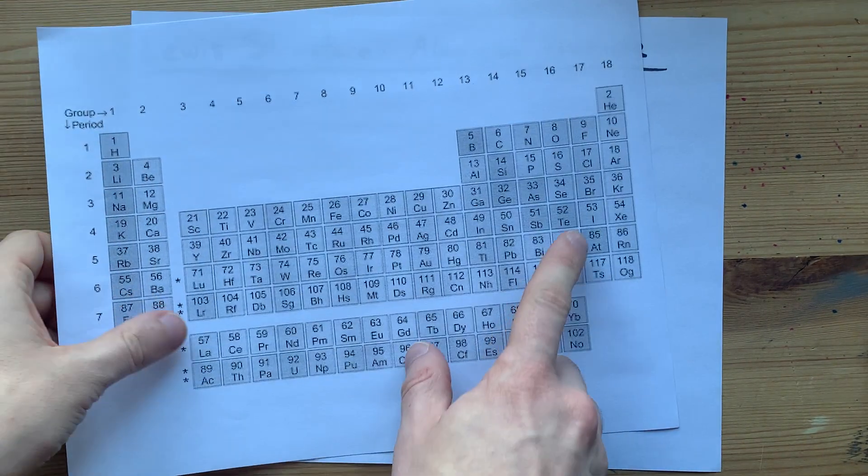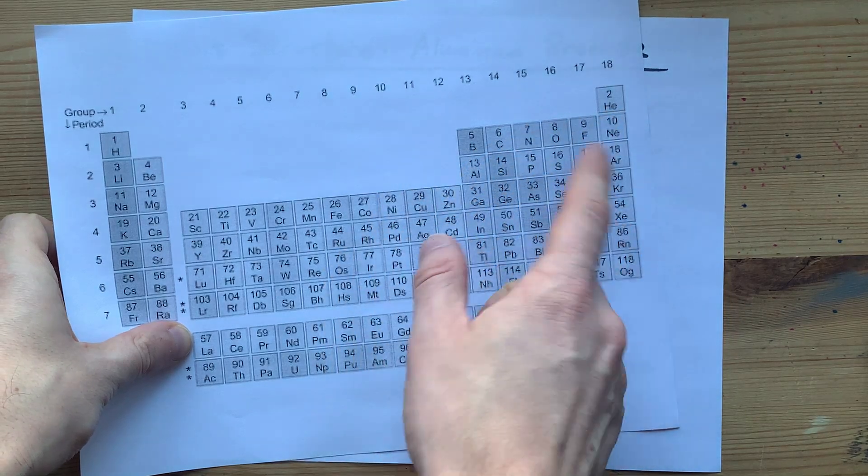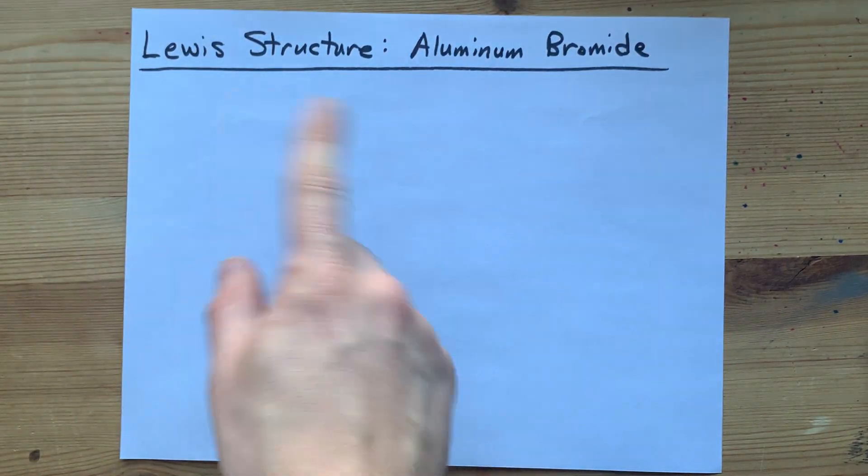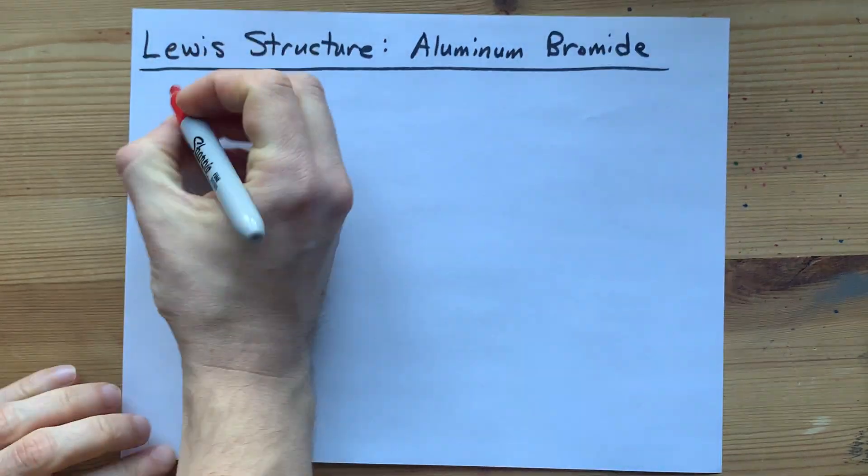combining with bromine, a non-metal, from the right-hand side of the staircase. It's important to identify that we have a metal and a non-metal because